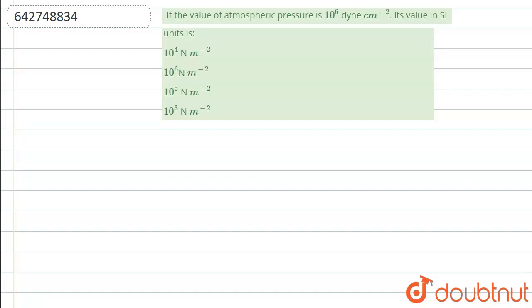Hello guys, the next question of physics we have is: if the value of atmospheric pressure is 10 to the power 6 dyne per centimeter square, then its value in SI units will be,